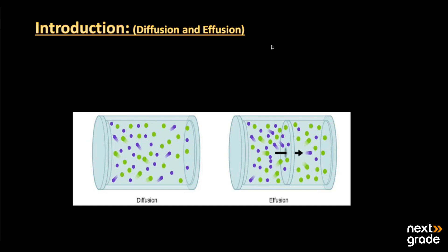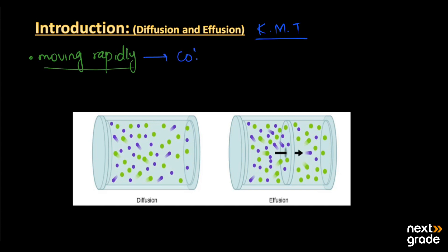According to the kinetic molecular theory (KMT), gas molecules are moving rapidly. These molecules collide with one another and also with the walls of the container. When they collide, they change their direction — in other words, they scatter.